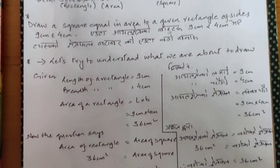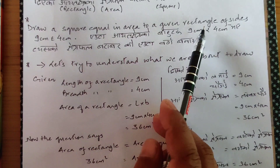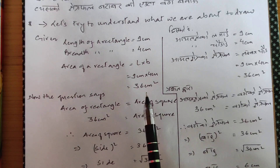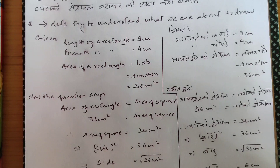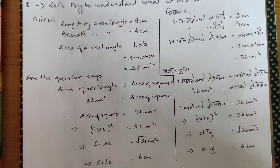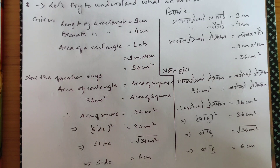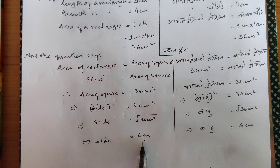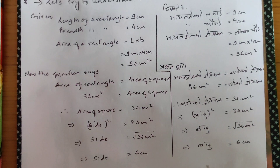The question says: area of rectangle is equal to area of square. We found that area of rectangle is 36 centimeter square. So area of square is also 36 centimeter square, since they are equal. Using the formula: side² = 36 cm², taking the square root, the side of the square is 6 centimeter.